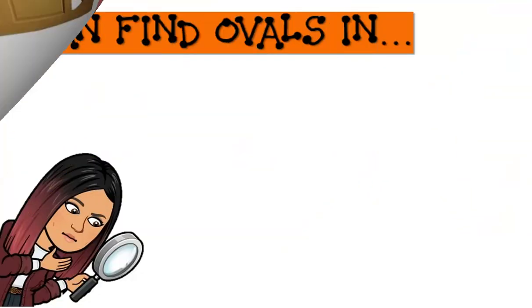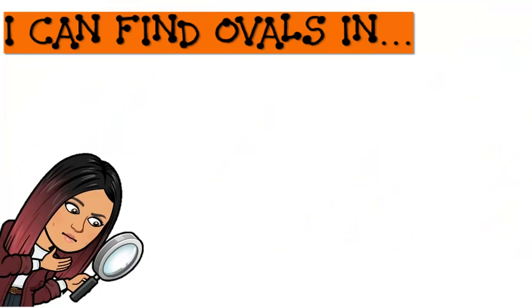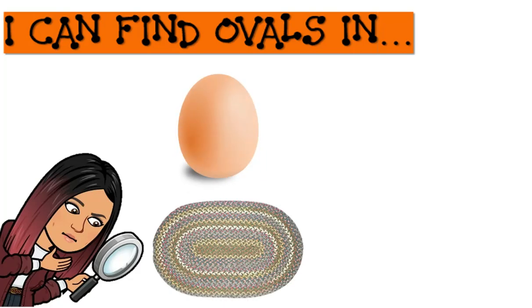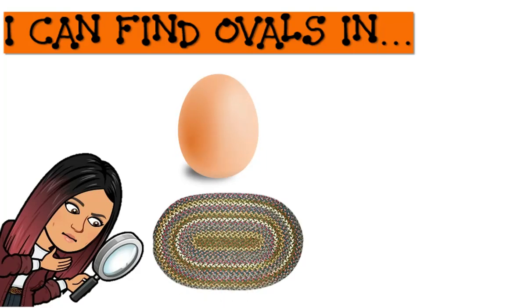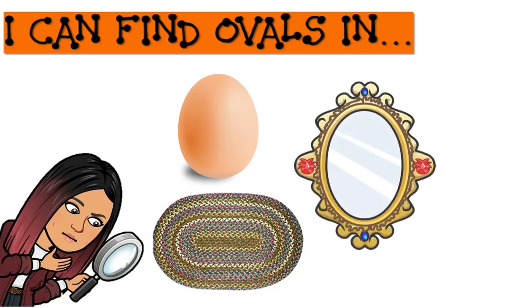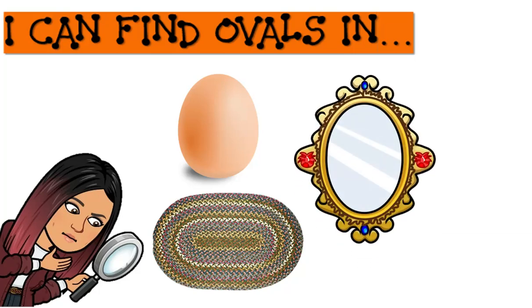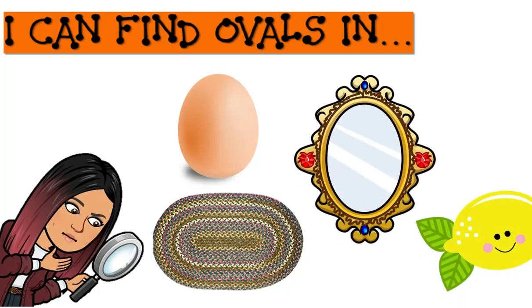I can find ovals in... an egg, a rug, a mirror, a lemon.